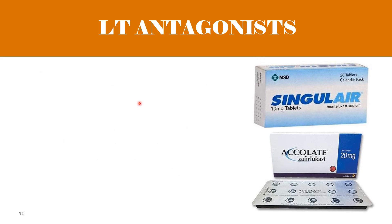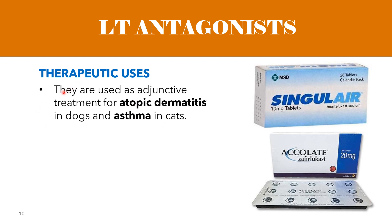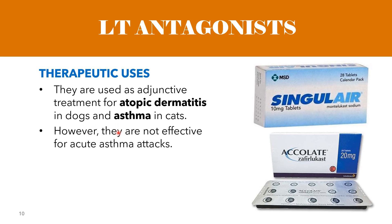For their therapeutic uses, leukotriene antagonists are used as adjunctive treatment for atopic dermatitis in dogs and asthma in cats. However, they are not effective for acute asthma attacks. For pharmacokinetics, the available information is for humans only, as the pharmacokinetics of leukotriene antagonists have not been studied in domestic animals. No adverse effects have been reported in animals due to limited experience. In humans, common adverse effects include GI distress, hallucinations, and agitation.